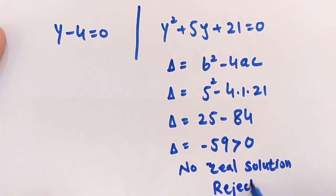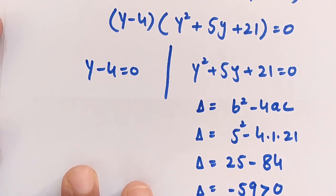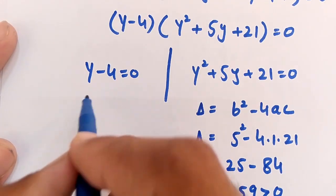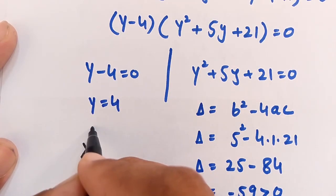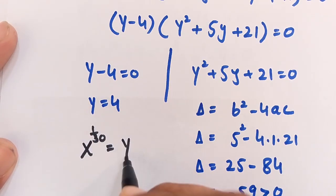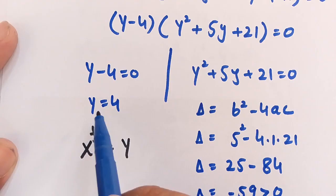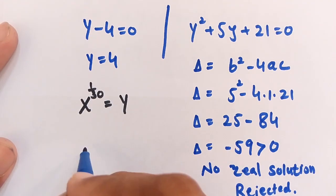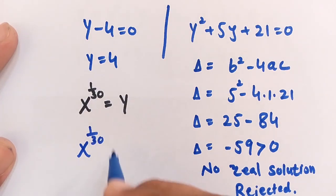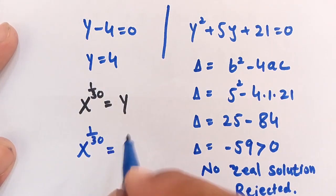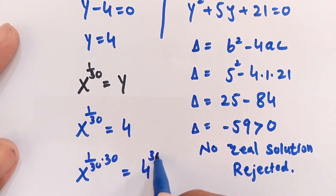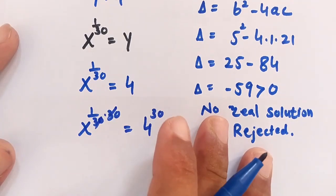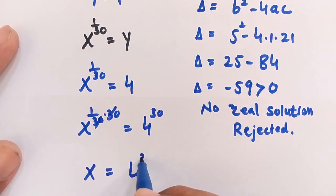Solving Case 1: y − 4 = 0 gives y = 4. Since we set y = x to the power of 1 over 30, we have x^(1/30) = 4. Raising both sides to the power of 30: x = 4 to the power of 30. This is our answer.